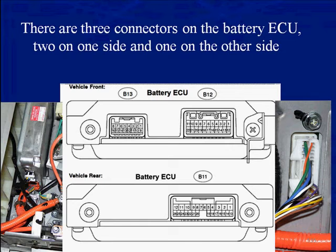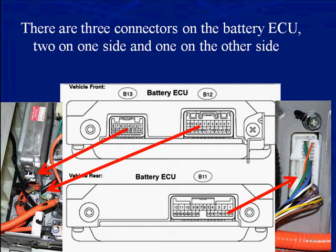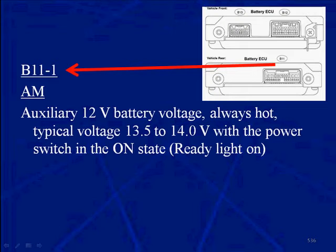There are three connectors on the battery ECU — two on one side and one on the other. When we look at the two, we can see on the left there are two connectors. And the one connector is on the other end. These connectors are designated B11, B12, B13. When we talk about individual circuits, B11-1 means connector 11, cavity 1, and that circuit is called AM.